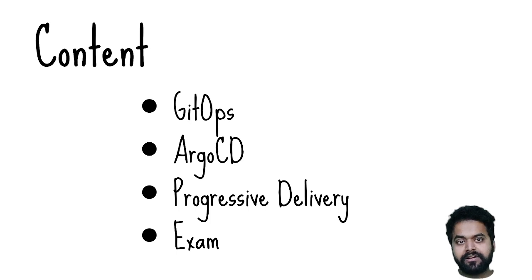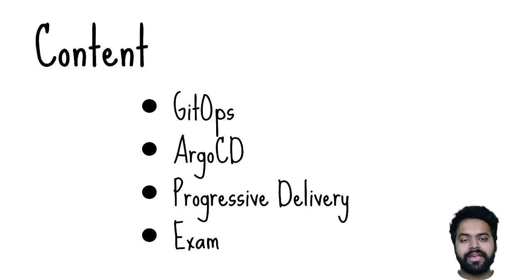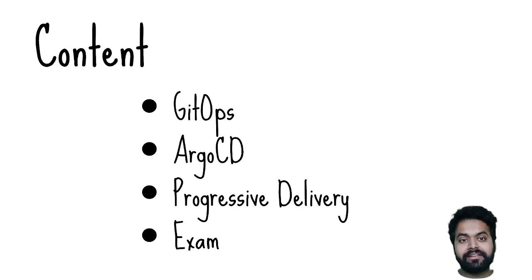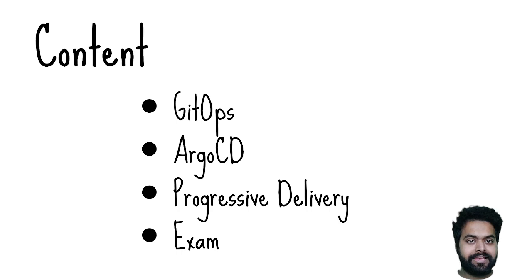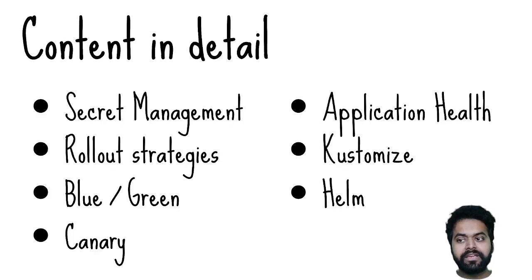The third topic is progressive delivery — how you can deliver applications with higher confidence. The example used here is Argo Rollouts, and the course content has scenarios around it so you can understand the concepts of GitOps. There's also a little exam at the end.